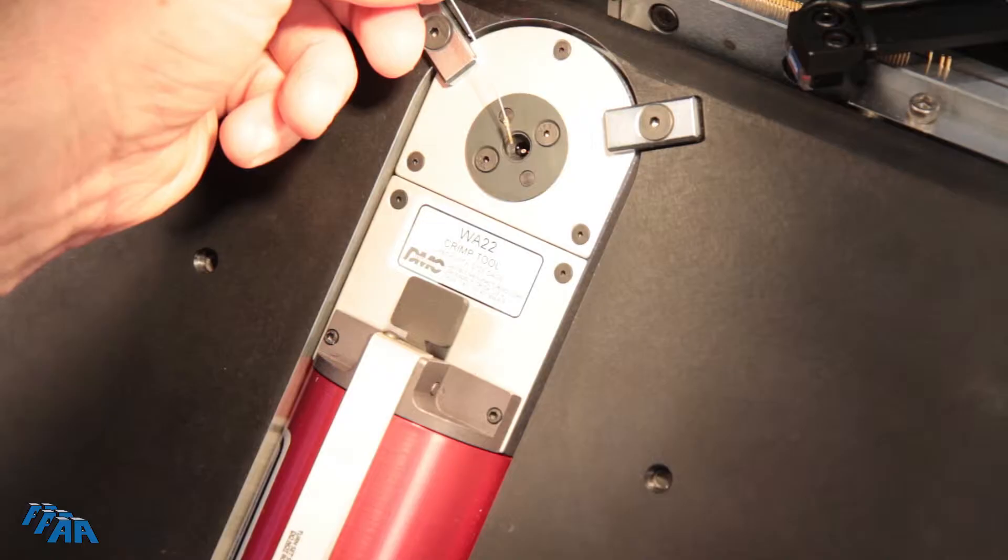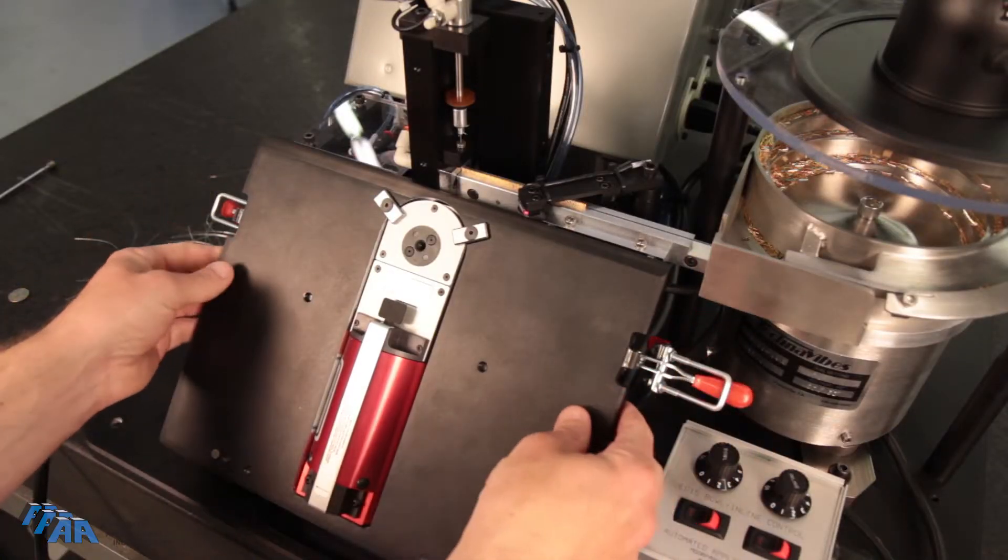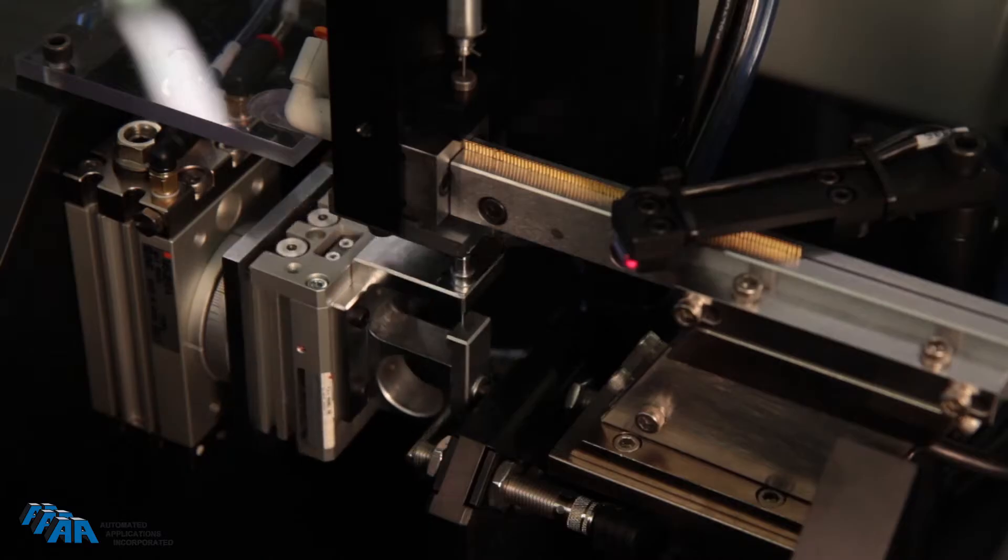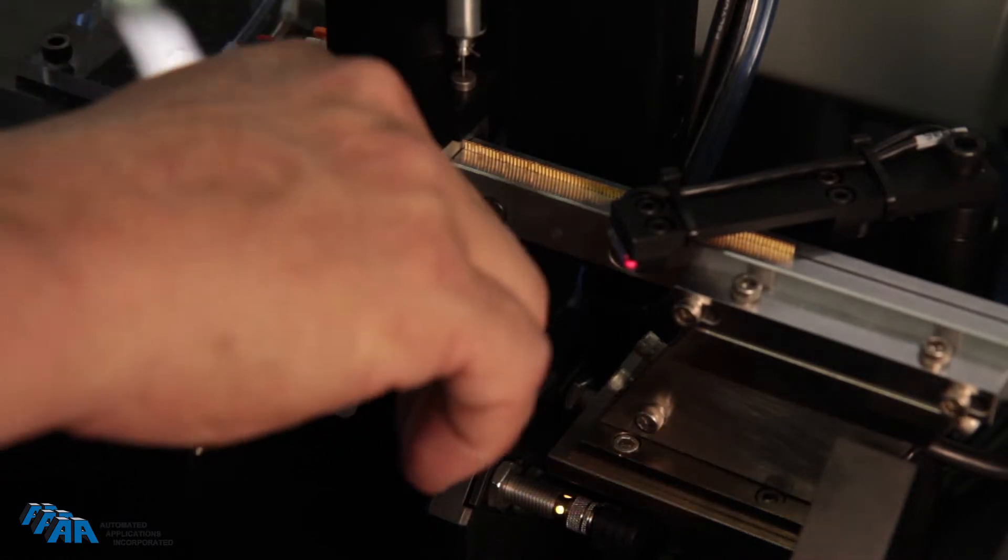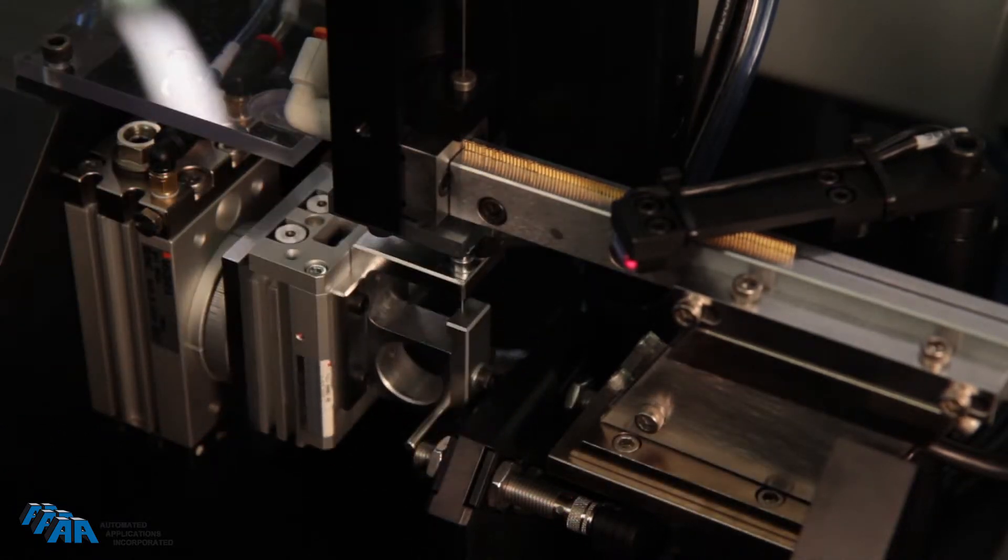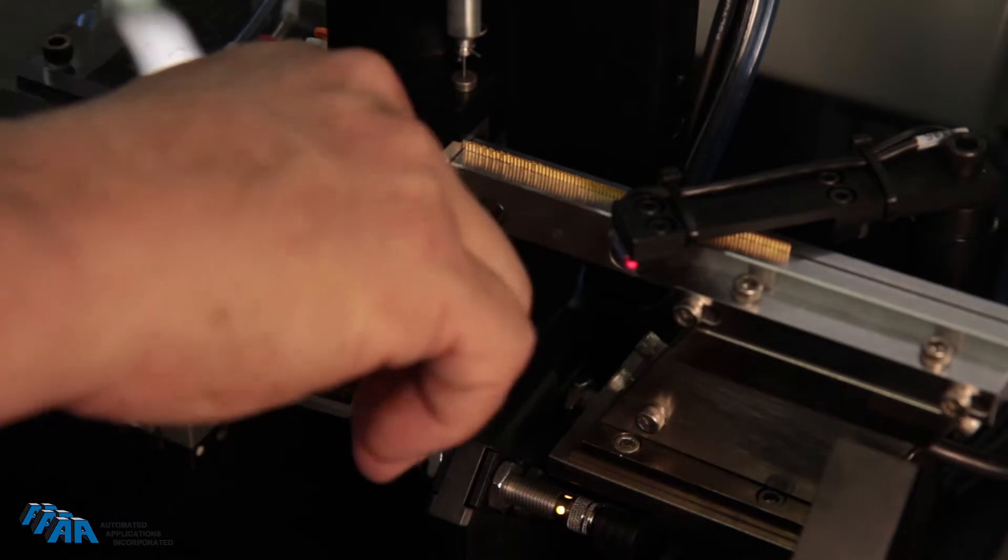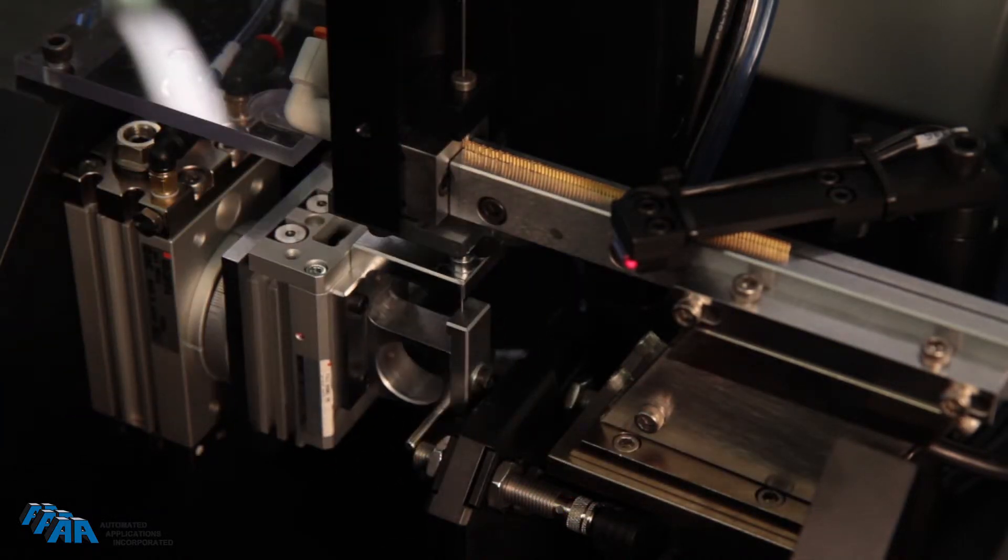We have a bowl here that feeds the contacts, we have an inline rail feeding them down into the machine, we have a detector here that detects when the inline is full, we have an insertion cylinder here that inserts the contact over a mandrel and then feeds it up into a Daniels crimp head.